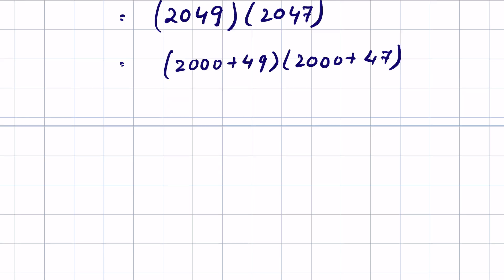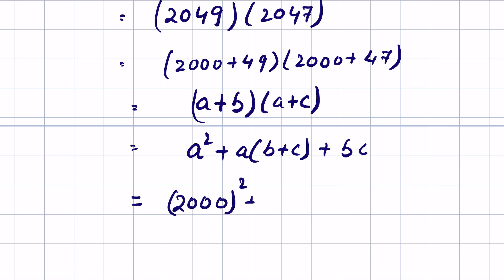This is in the form of the algebraic expression a plus b times a plus c, which can be written as a squared plus a times the quantity b plus c, plus b times c. This becomes 2000 squared plus 2000 times 49 plus 47, plus 49 times 47.